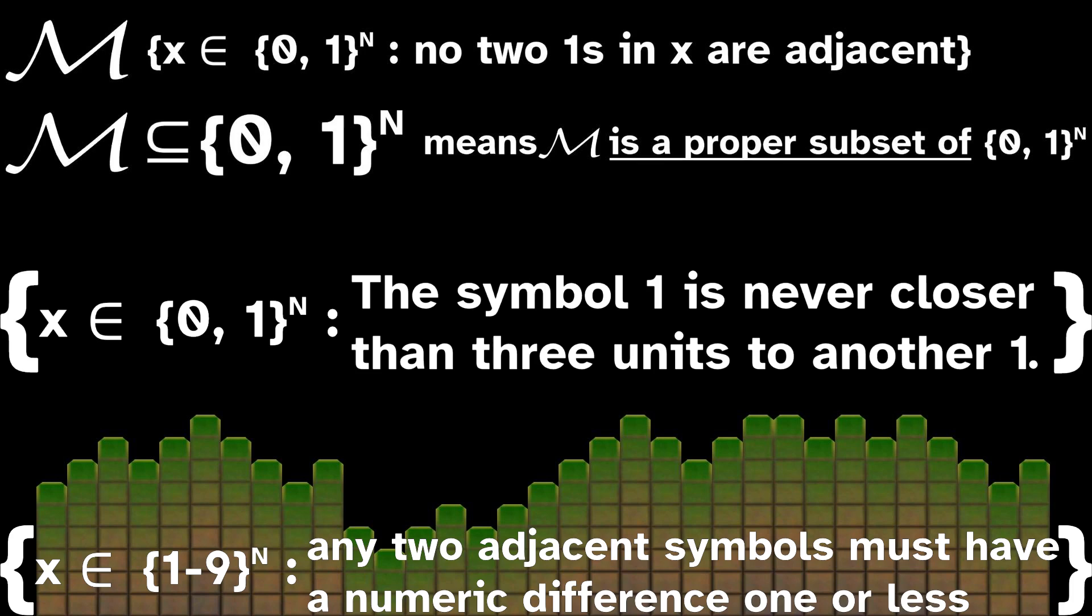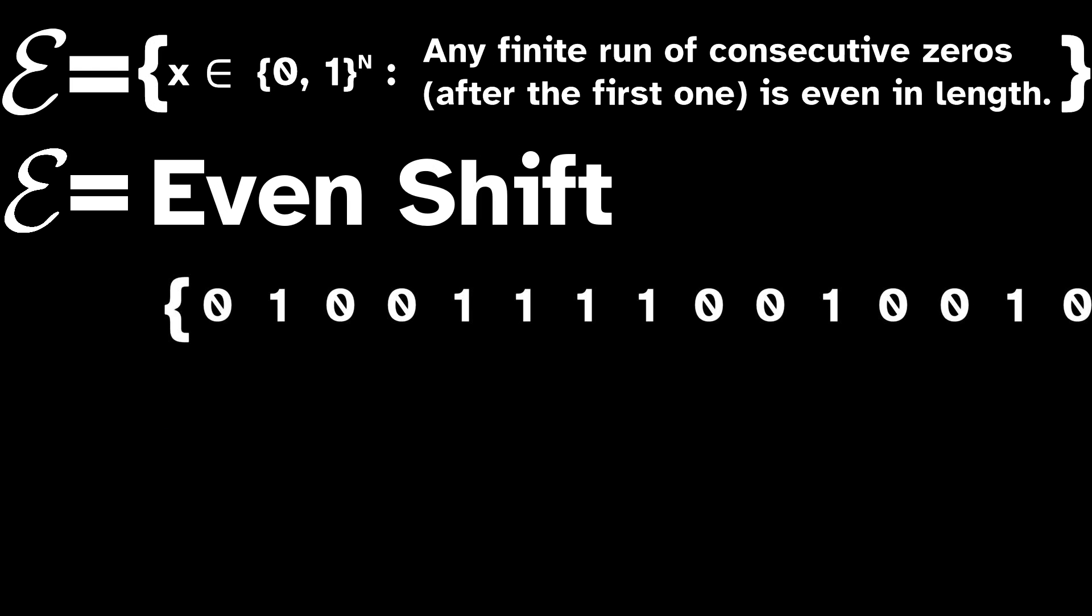So, the golden mean shift, and the tweaked golden mean shift we just described, as well as the heightmap shift we looked at from before, are all examples of SFTs. But is the even shift an SFT? Pause for a moment if you want to think it through.